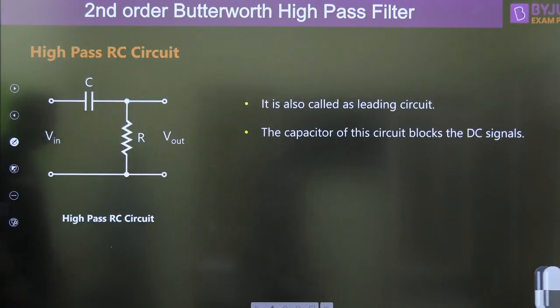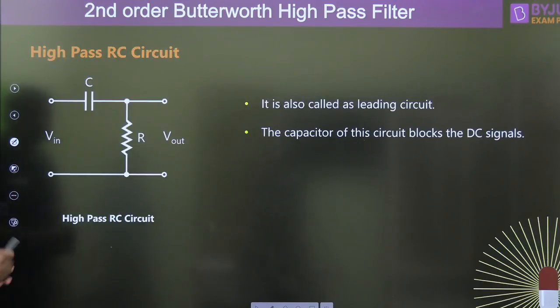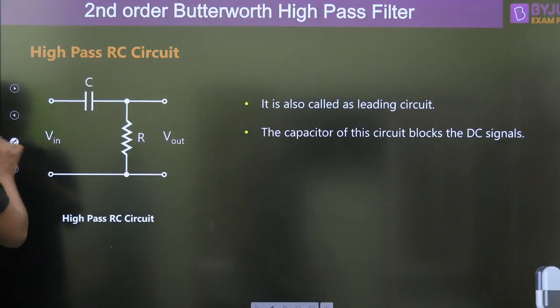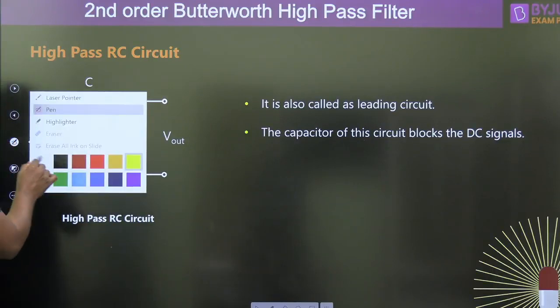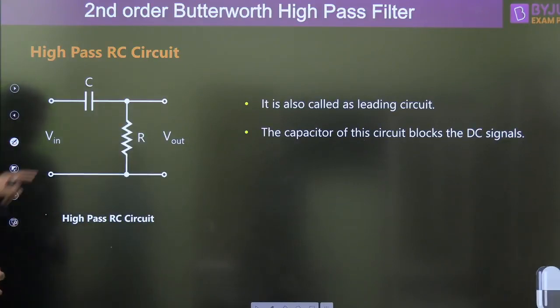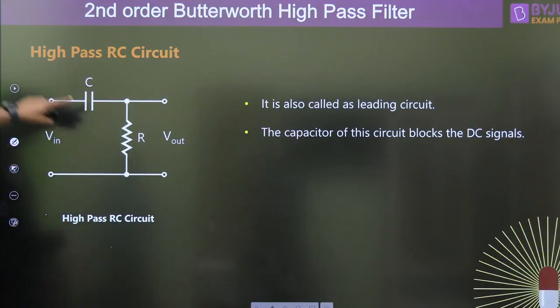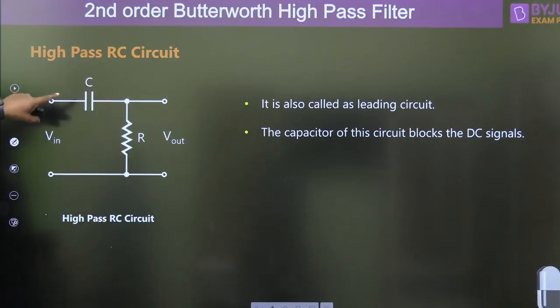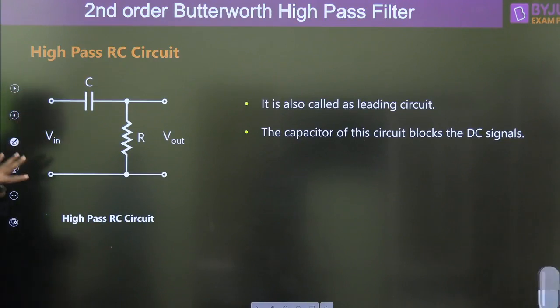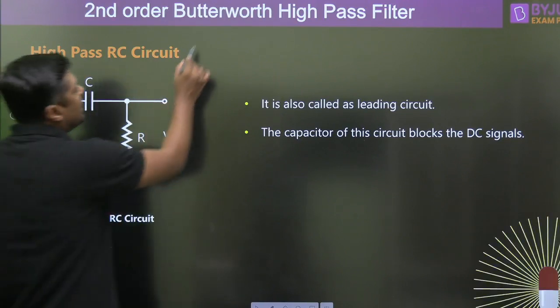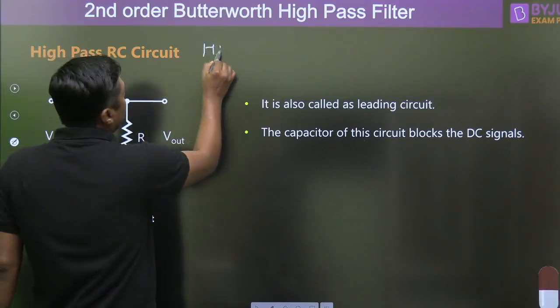This is a high pass RC circuit. Watch this diagram — here it is R, here it is C. This is called a high pass RC circuit or high pass filter (HPF).